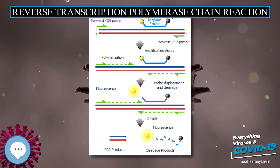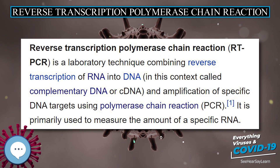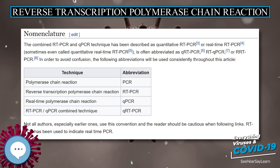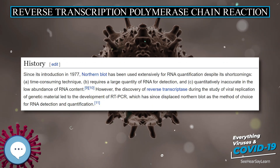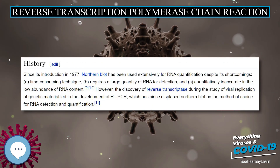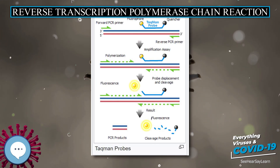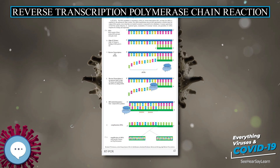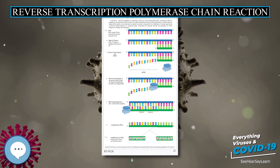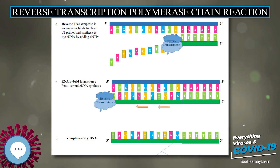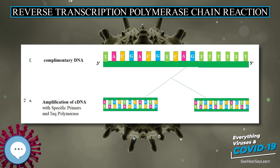Molecular Beacon probes: Similar to TaqMan probes, molecular beacons use FRET detection with a fluorescent probe at the 5-end and a quencher at the 3-end of an oligonucleotide substrate. However, whereas TaqMan probes are cleaved during amplification, molecular beacon probes remain intact and rebind to a new target during each reaction cycle. When free in solution, close proximity of the fluorescent probe and quencher prevents fluorescence through FRET, but when the probe hybridizes to a target, the dye and quencher separate, resulting in light emission upon excitation. Like TaqMan probes, molecular beacons are expensive and require separate probes for each RNA target.